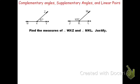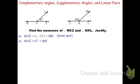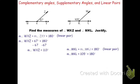For the first problem, the measure of angle WXZ plus the measure of angle ZXY, the 67-degree angle on the right, add to be 180 — because they're a linear pair. Substituting, angle WXZ plus 67 degrees equals 180, so angle WXZ is 113 degrees. In the second problem, the measure of angle JKM, which is 105 degrees, plus the measure of angle MKL on the right, add to be 180 — again because they're a linear pair. Subtracting, the measure of angle MKL is 75 degrees.